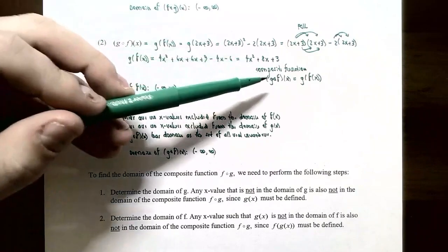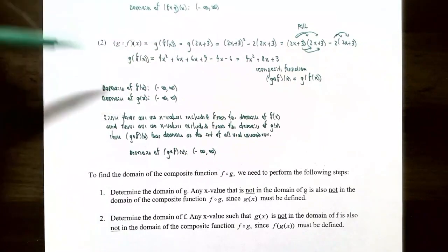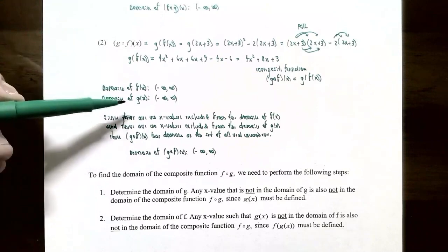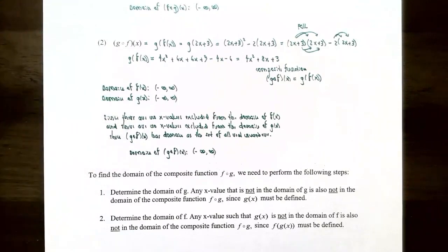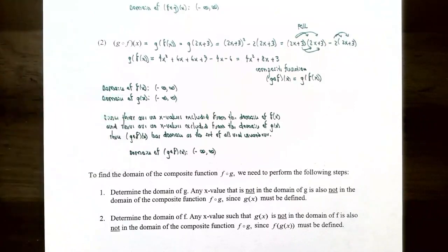Now let's find the domain of g ∘ f. The inside function is f(x) = 2x + 3, a linear function — no division by zero, no even roots, so its domain is all real numbers. The outside function g(x) = x² − 2x is quadratic, also with domain all real numbers. Since there are no x values to exclude from either the inside or outside function, the domain of g ∘ f is also all real numbers, or (−∞, ∞).